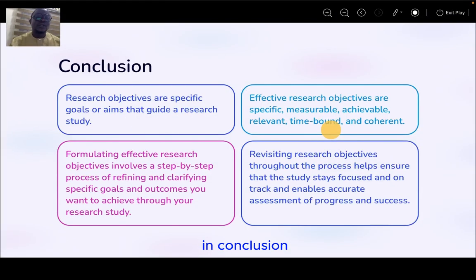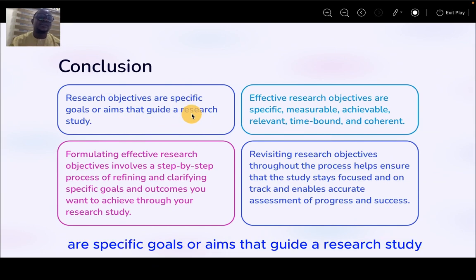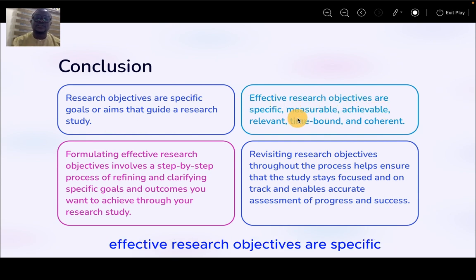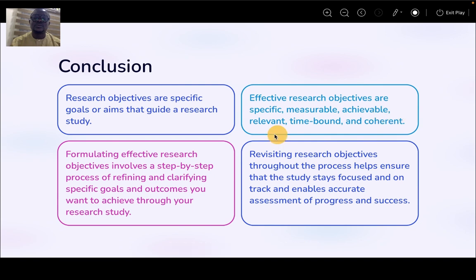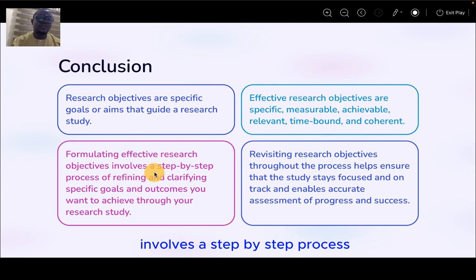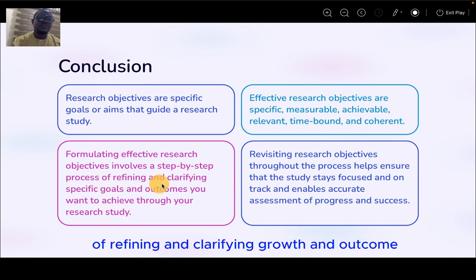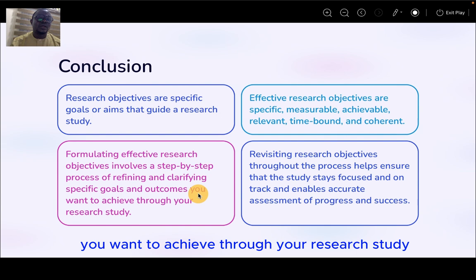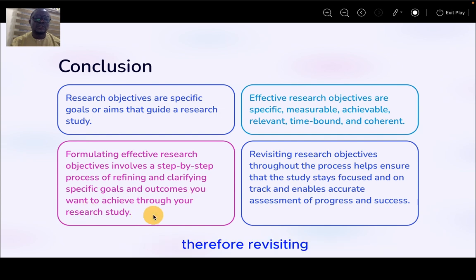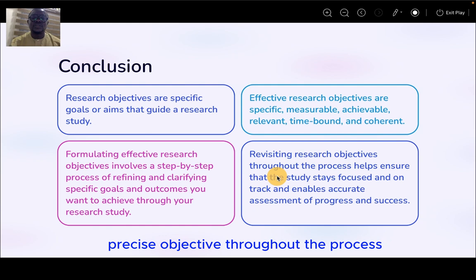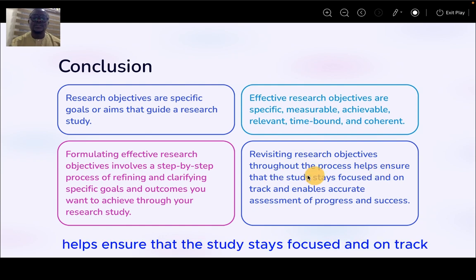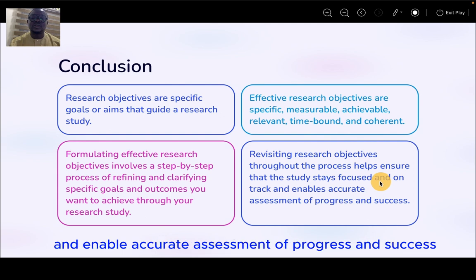In conclusion, research objectives are specific goals or aims that guide a research study. Effective research objectives are specific, measurable, achievable, relevant, time-bound, and coherent — that is SMART-C. Formulating effective research objectives involves a step-by-step process of refining and clarifying goals and outcomes you want to achieve. Therefore, revisiting research objectives throughout the process helps ensure the study stays focused and on track, and enables accurate assessment of progress and success.